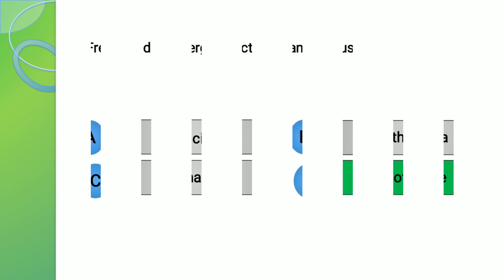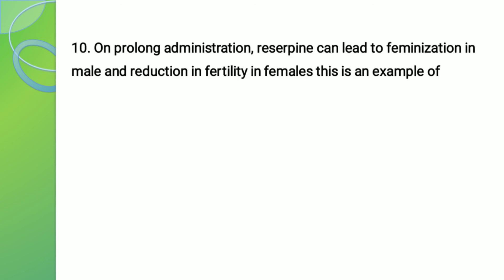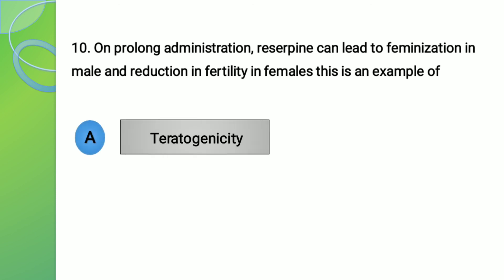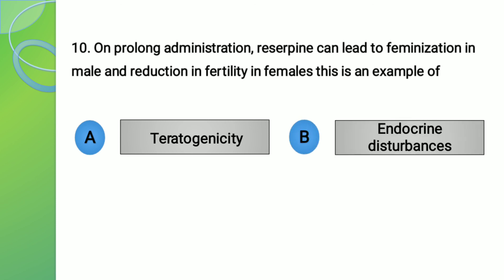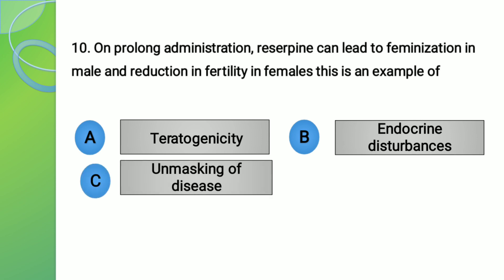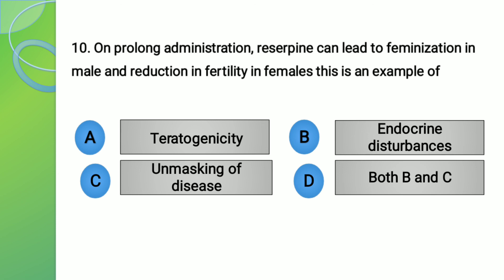Moving to the last question, number 10. On prolonged administration, reserpine can lead to feminization in males and reduction in fertility in females. This is an example of? The options are: A - Teratogenicity, B - Endocrine disturbances, C - Unmasking of disease, and D - Both B and C, that is endocrine disturbances and unmasking of disease.